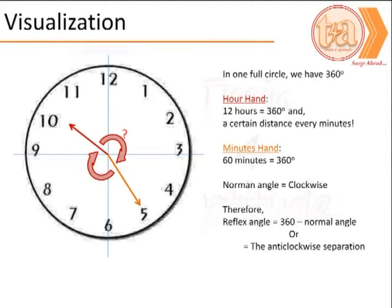Note that the minute's hand covers 360 degrees in 60 minutes while the hour hand covers 360 degrees in 12 hours, and it also covers a certain distance every minute. The normal angle would be the clockwise representation, and therefore the reflex angle would be 360 minus the normal. The other way is to calculate the anti-clockwise separation between the hour hand and the minute's hand.